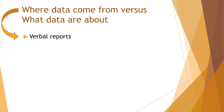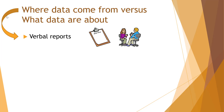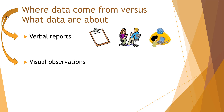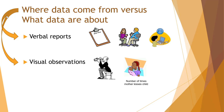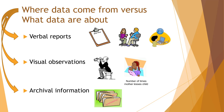Where do data come from? They can come from verbal reports, like individuals taking a survey or doing interviews, including internet surveys. They can come from visual observation — actually looking at people's behavior, like observing the number of times a mother kisses her child. Data can also come from archival information like agency records. All of this is about the source of information.